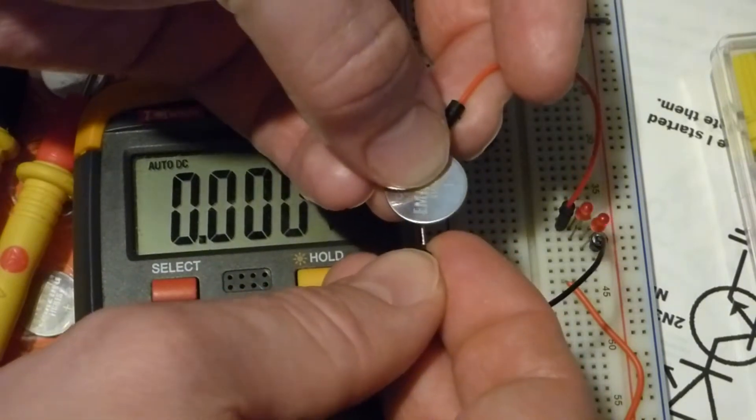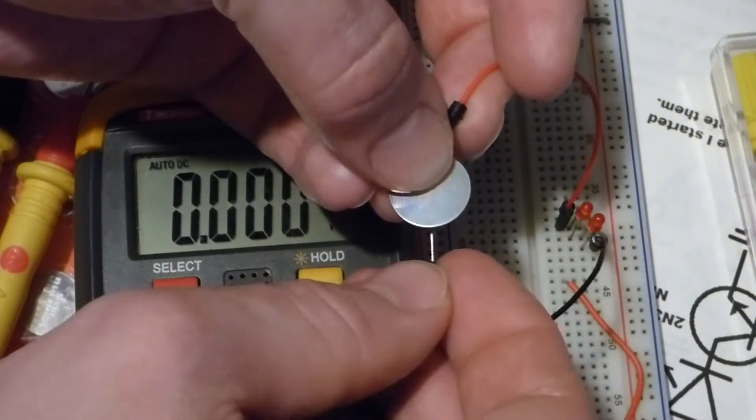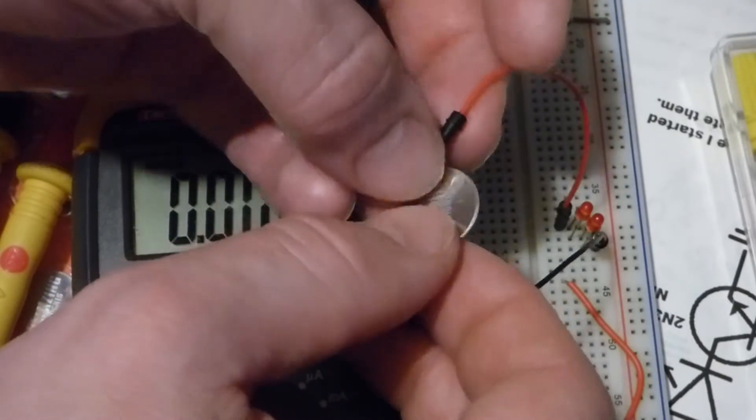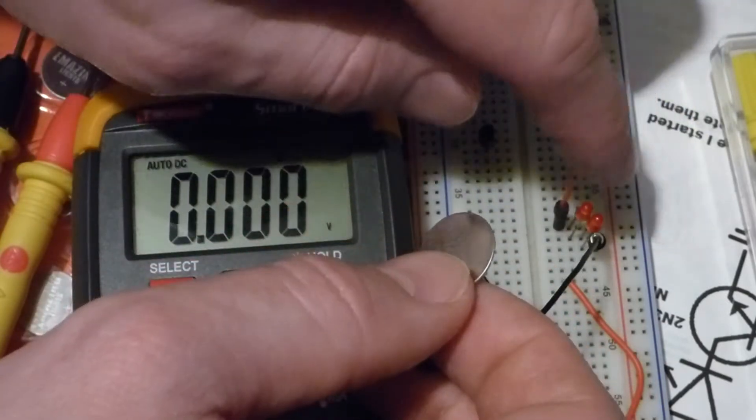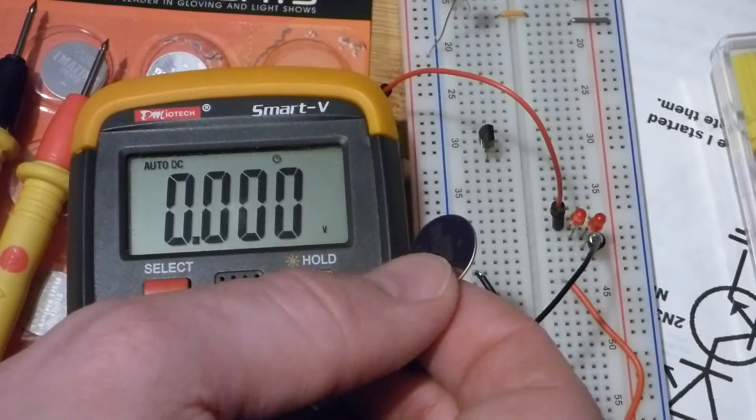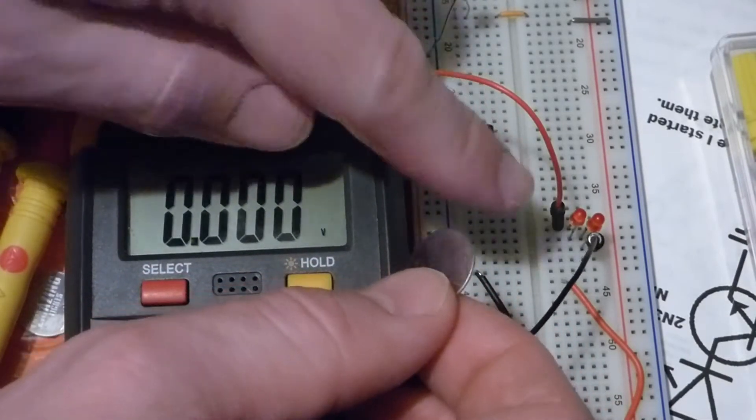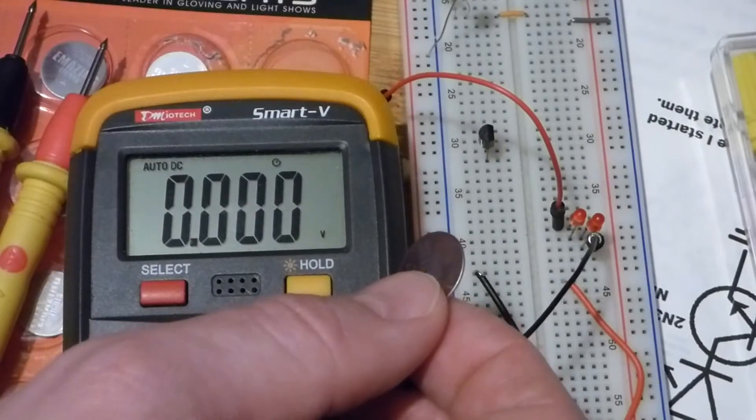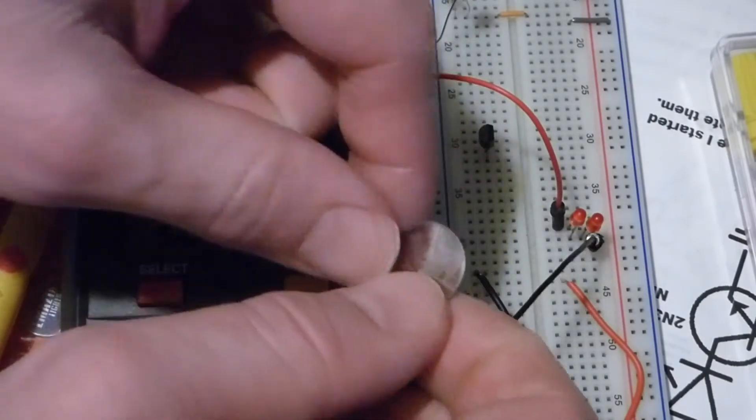The reason why very little current's flowing, even though we have no resistor, the battery has a little bit of resistance, so does the wires and stuff. But each one of these LEDs is blocking about 1.5 volts and at low current, that's about what they block. As current goes up, they block more voltage.